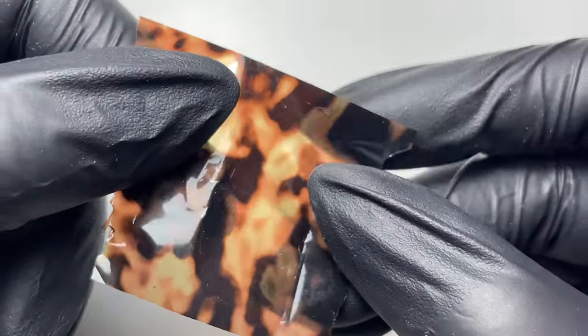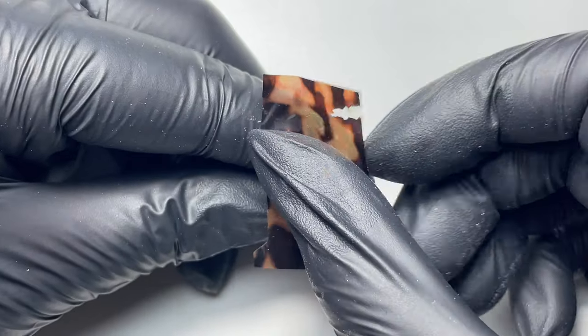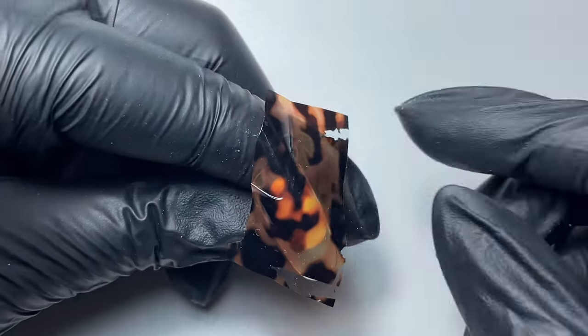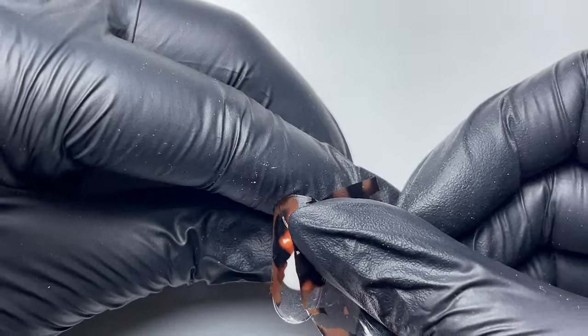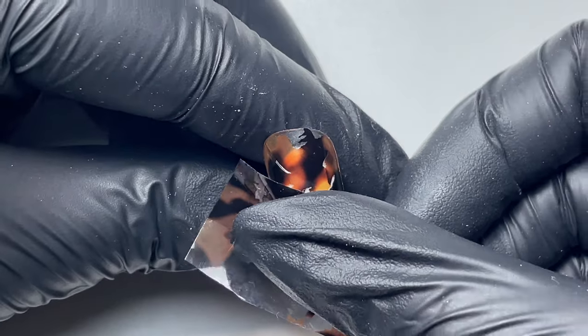First method we're working on is a dabbing method. So rather than transferring the whole of the foil onto the nail in one go, we're going to pick parts that we want to apply onto the nail and remove it and reapply it until we get the desired effect.